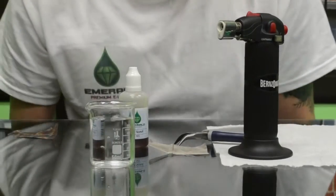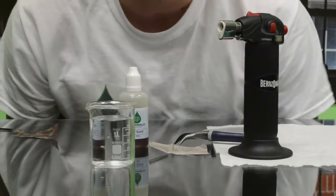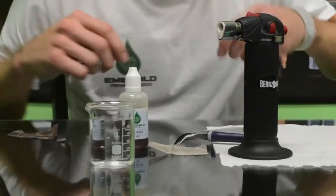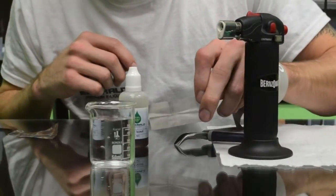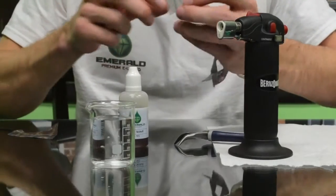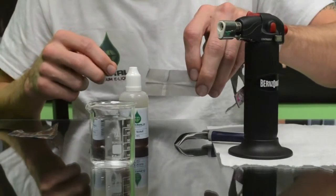I'm Jeff with Emerald Vapors and I'm going to show you how to oxidize a stainless steel mesh wick. You're going to start with your wick, make sure it's already cut to about the size of your device. You're going to put it in as far as the length goes.